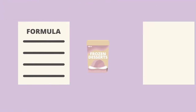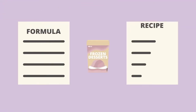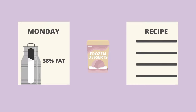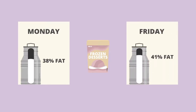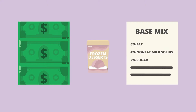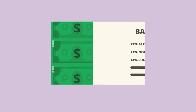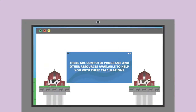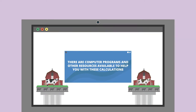It is important to understand that making a frozen dessert formula is different than writing a recipe because ingredients may vary in composition. For example, your cream may be 38% fat one day and 42% fat on a different day. To optimize costs, you need to determine the composition of your base mix. You can then blend the appropriate amount of ingredients needed to have a consistent, quality product. There are computer programs and other resources available to help you with these calculations.